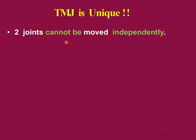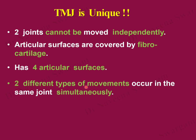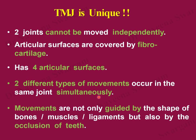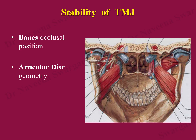Features that make the temporomandibular joint unique: both joints cannot be moved independently; articular surfaces are covered by fibrocartilage, unlike other synovial joints where surfaces are covered by hyaline cartilage; the joint has four articular surfaces due to the articular disc dividing the cavity into two compartments where two different types of movements occur simultaneously; and movements are guided not only by the shape of bones, muscles, and ligaments but also by occlusion of the teeth. Stability is maintained by occlusal position, geometry of the articular disc, surrounding ligaments, and muscle tension.